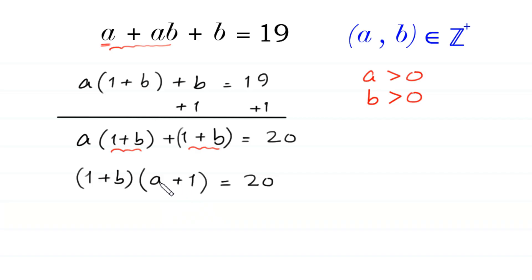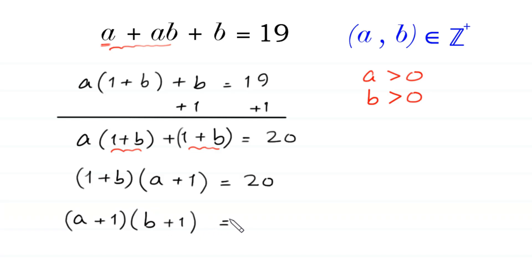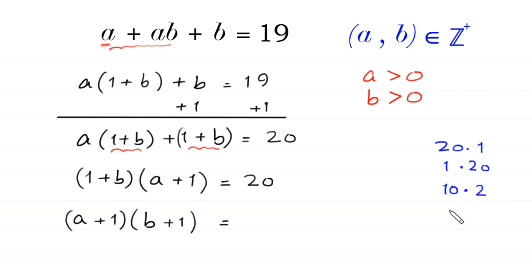We write this as (a plus 1) times (b plus 1) is equal to 20. Now, 20 can be factorized as: 20 times 1, 1 times 20, 10 times 2, 2 times 10, 4 times 5, and 5 times 4.